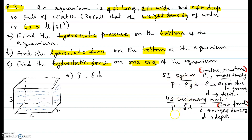For US customary units where the measures are feet and pounds — which is the case here since the aquarium length is 4 feet and force is measured in pounds — we use the formula pressure equals delta times D. There is a difference between weight density and mass density: if it is weight density, then rho times G together becomes delta. That is what is given in this problem, so we use pressure equal to delta times D.